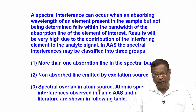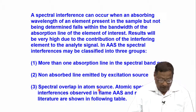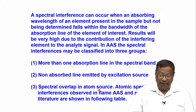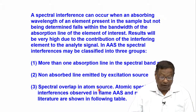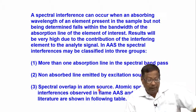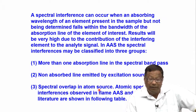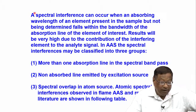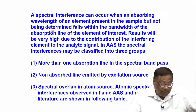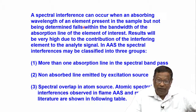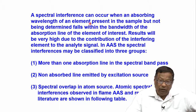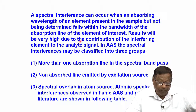Spectral interference can occur when an absorbing wavelength of an element present in the sample but not being determined has its resonance line falling within the bandwidth of the absorption line of the element of interest. This is the technical definition: the monochromator is unable to distinguish between the resonance lines of two different elements which fall within the bandwidth of the absorption line.